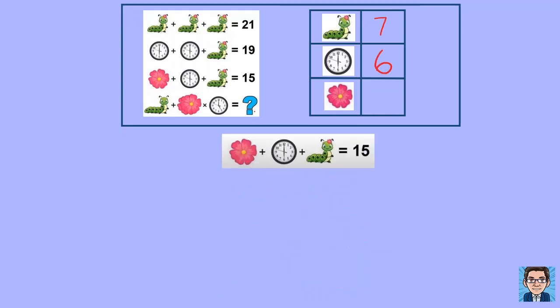So we've got a caterpillar at 7 and a clock at 6. Again, we can substitute those in now that we know a clock is 6 and a caterpillar is 7. And we're going to find out what a flower is. So a flower plus 13 equals 15. I'll just go through the steps here to finish it off. 13 is cancel, and then you get a flower is 2.